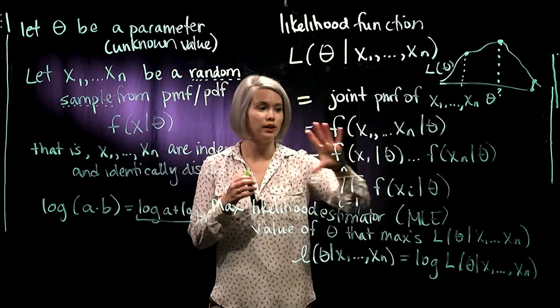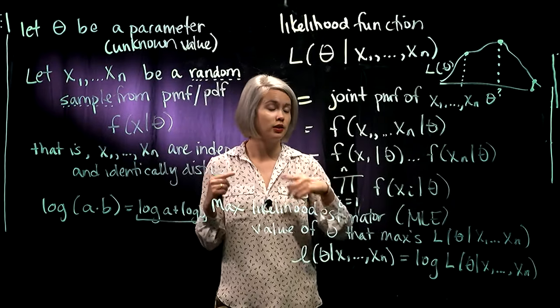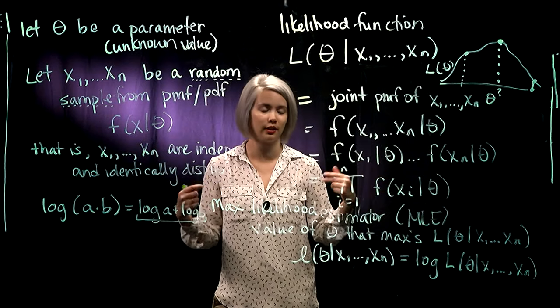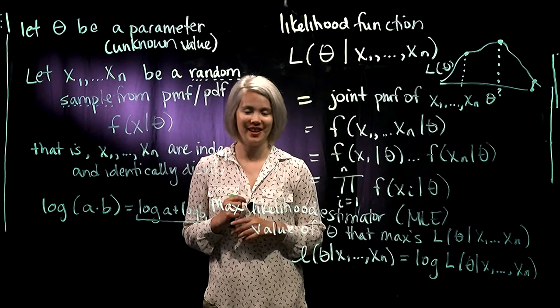So most of the time, we want to write down the likelihood, then take the log, and then we can take our first derivative, set that equal to zero, find that maximizer, and then take the second derivative to make sure that we actually have a maximizer and not a minimizer.